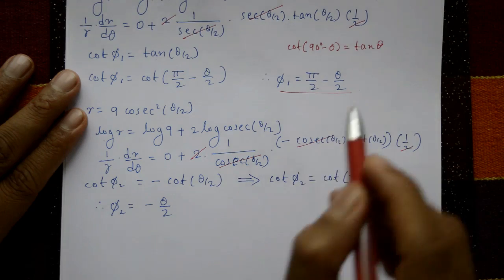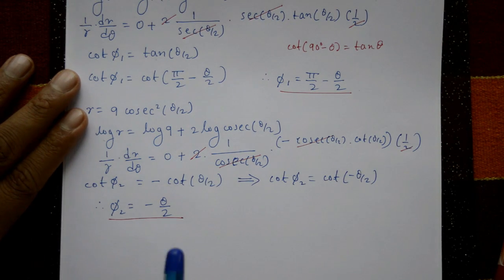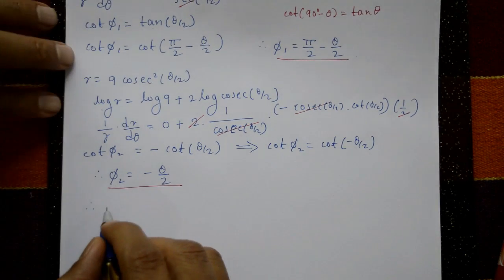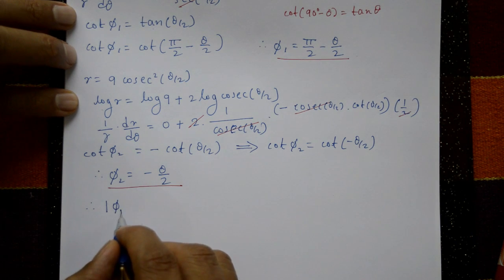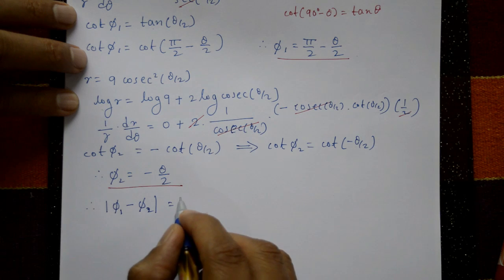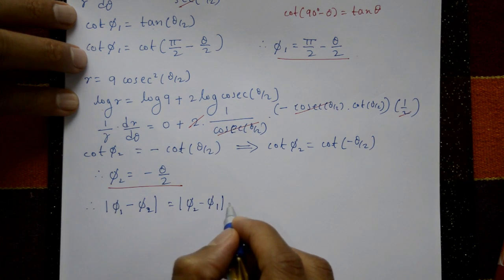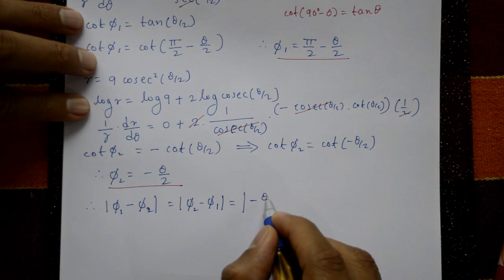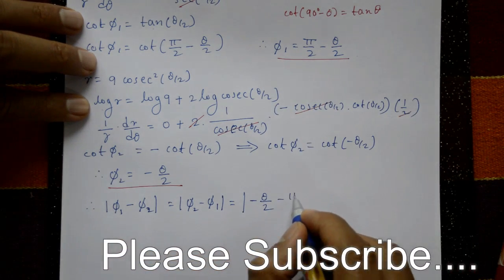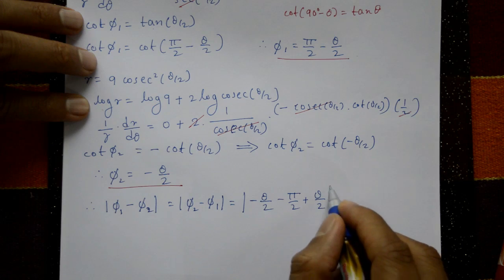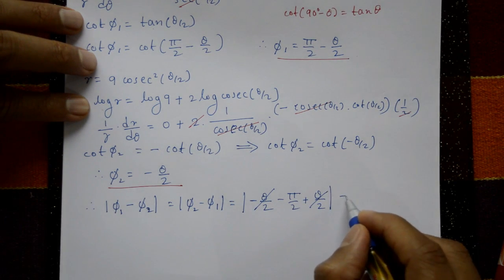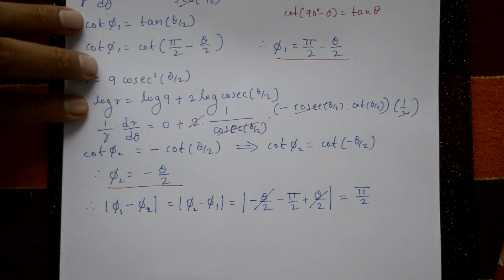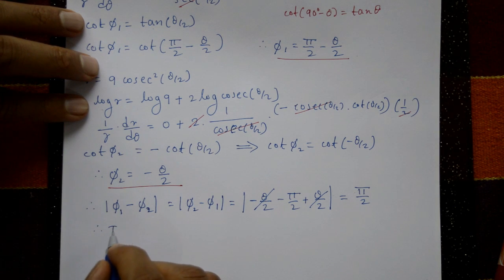Now φ₁ = π/2 − θ/2 and φ₂ = −θ/2. The angle of intersection is |φ₁ − φ₂| = |(π/2 − θ/2) − (−θ/2)| = |π/2 − θ/2 + θ/2| = π/2. Therefore the curves intersect each other orthogonally.